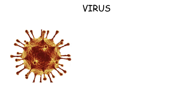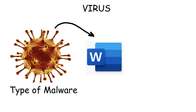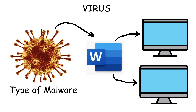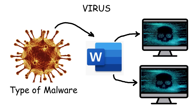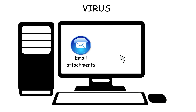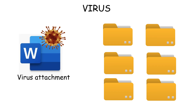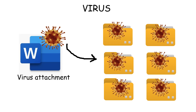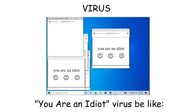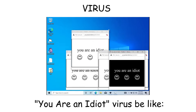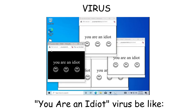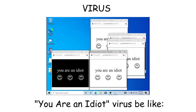A computer virus is a type of malware that attaches itself to legitimate files or programs and spreads when the infected file is executed. It often requires human action, like opening a malicious email attachment. Once clicked, it replicates by inserting its code into other files, potentially causing damage like data corruption, system slowdowns, or making a computer unusable.